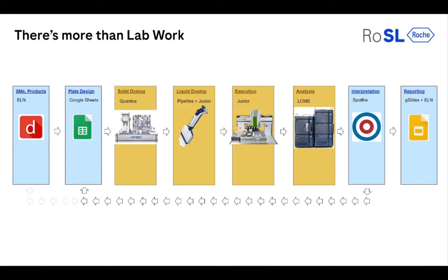For us it was really important to see which pillars take how much time, because in high throughput you want to make transitions between these pillars smooth so you can be faster. Each pillar needs a certain time, and sometimes it's really hard to make it faster — for instance, solid dosing, where the balance just needs time to tare and have a stable weight. But it is important to optimize other points, like interpretation and reporting, to bring those minutes down. You generate so much data that it takes time to look at, and you need a smooth way for fast analysis.